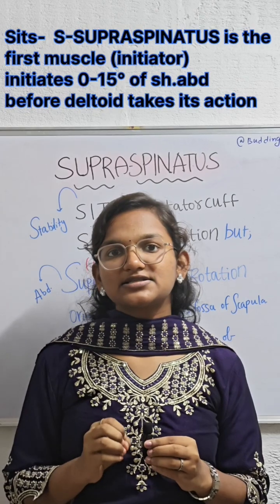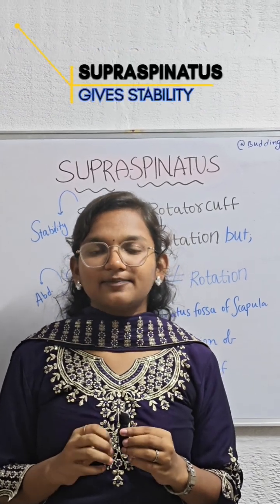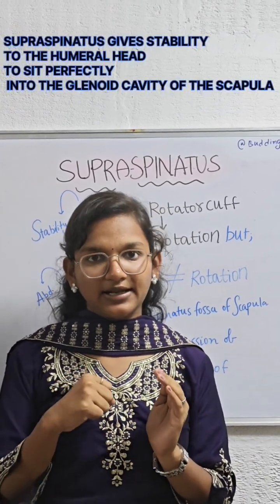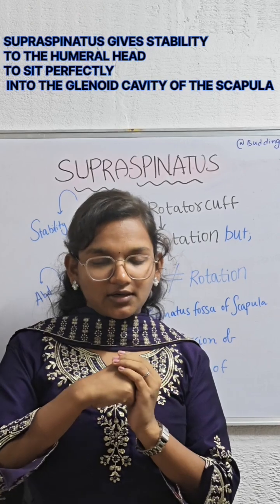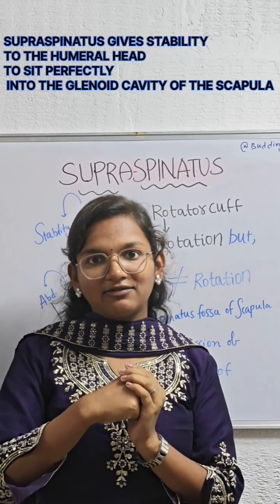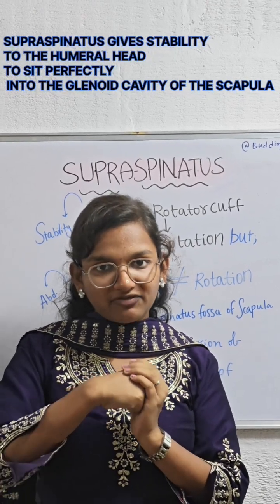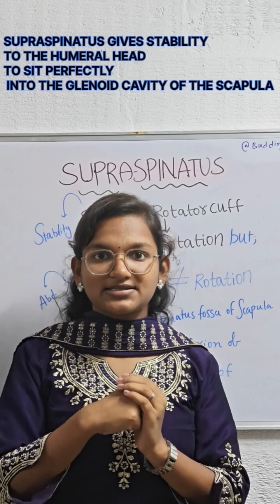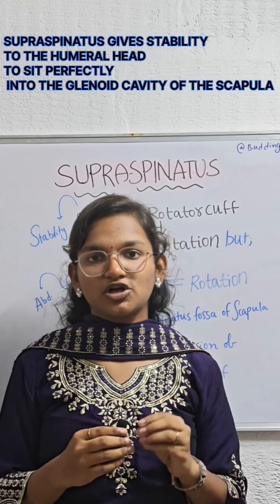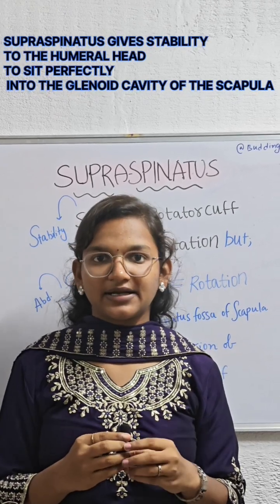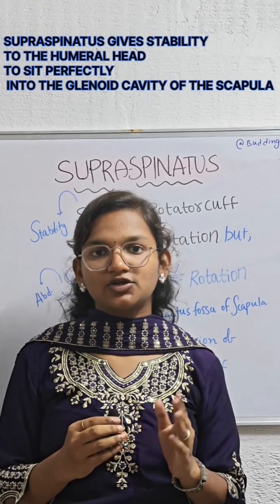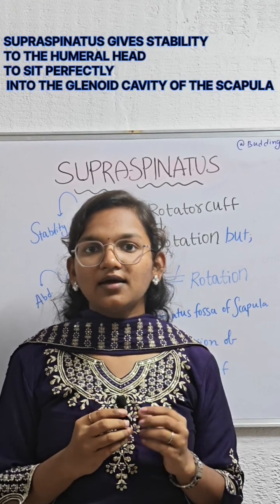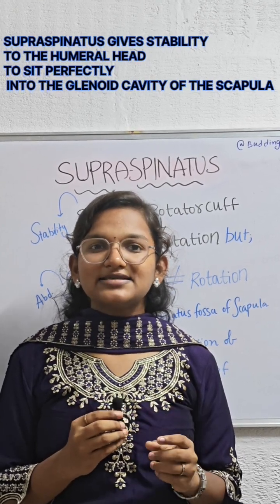The main function of supraspinatus is stability. The humeral head sits in the glenoid cavity, and the supraspinatus is the main stabilizer of the shoulder joint — it keeps the humeral head properly seated in the glenoid cavity of the scapula.